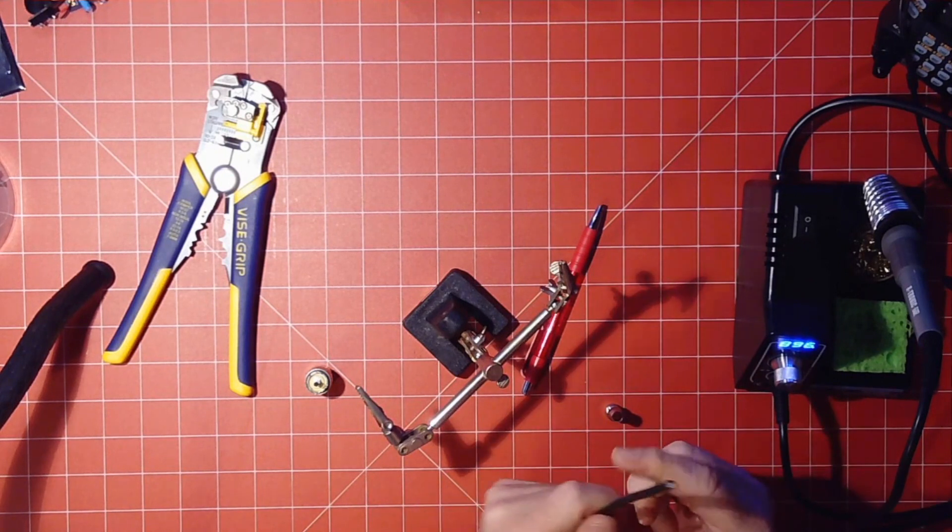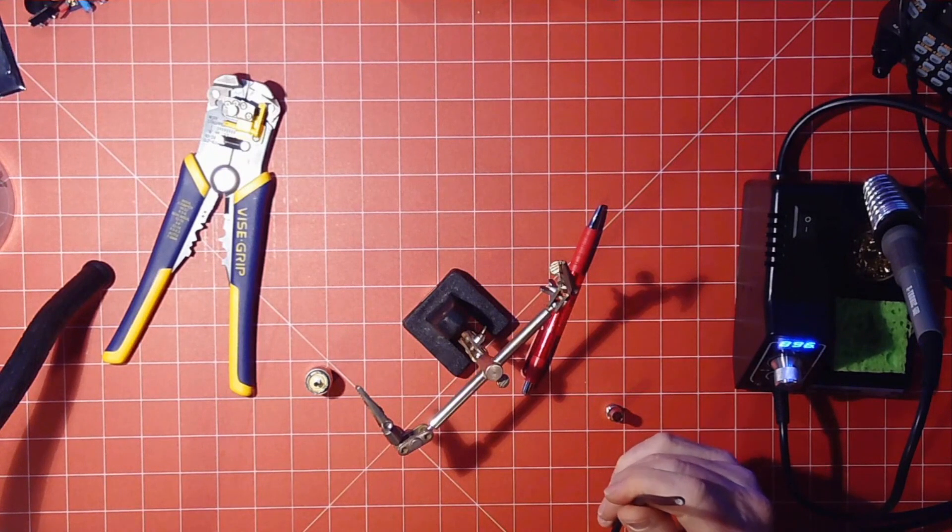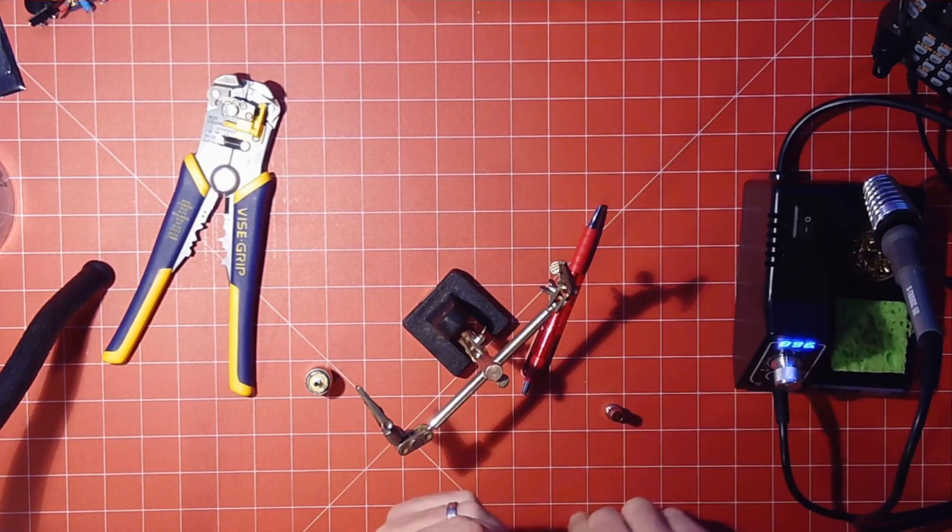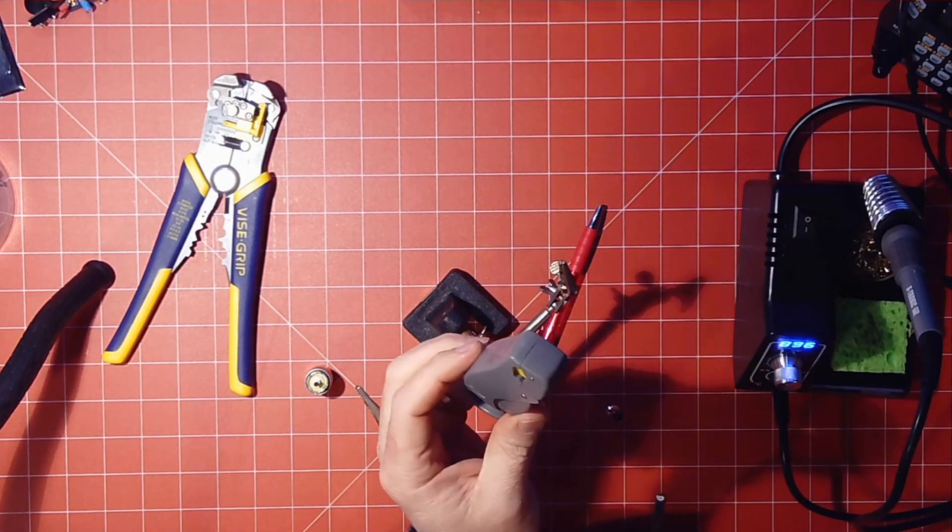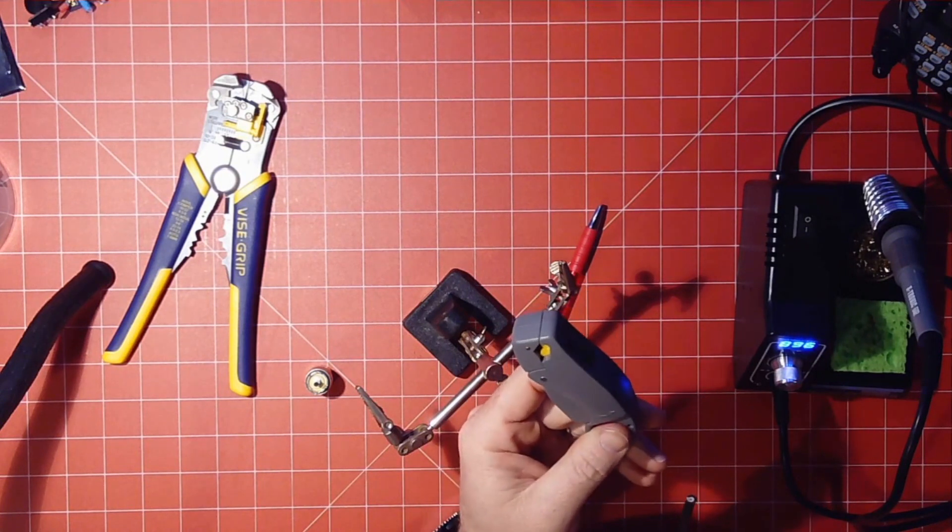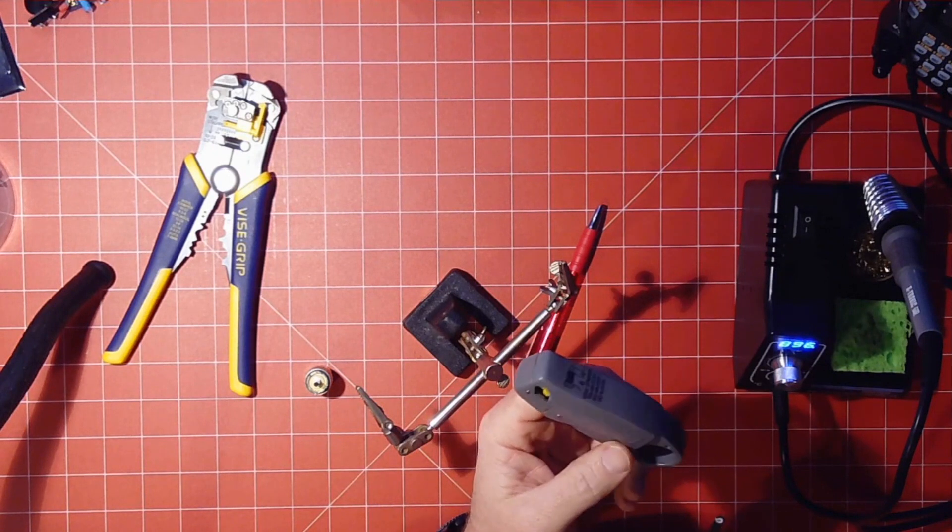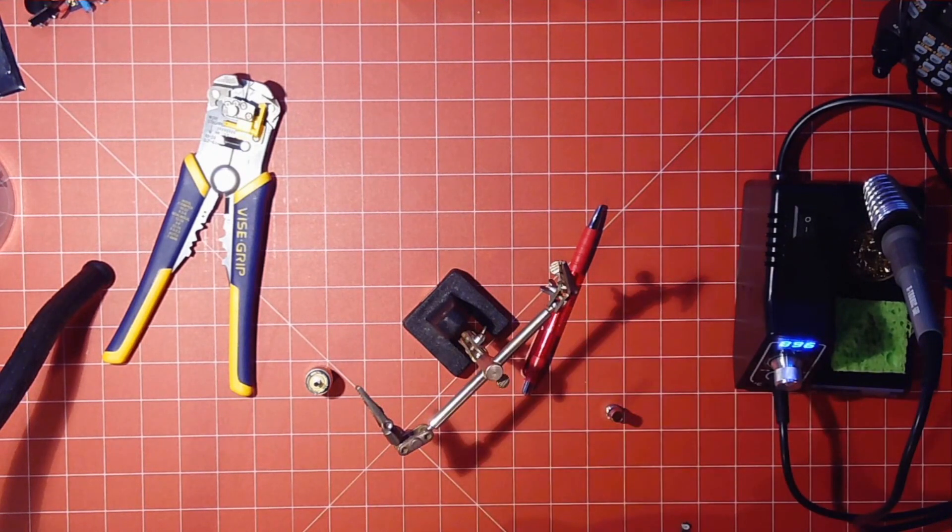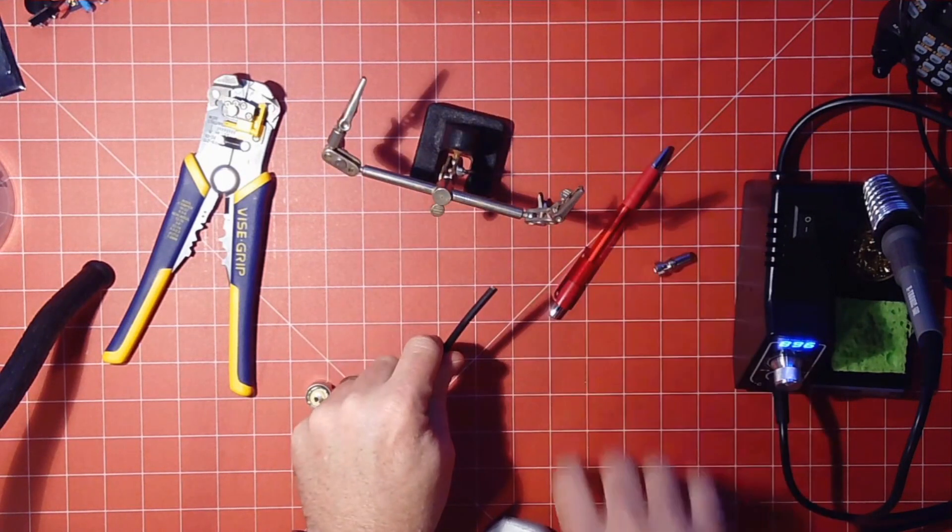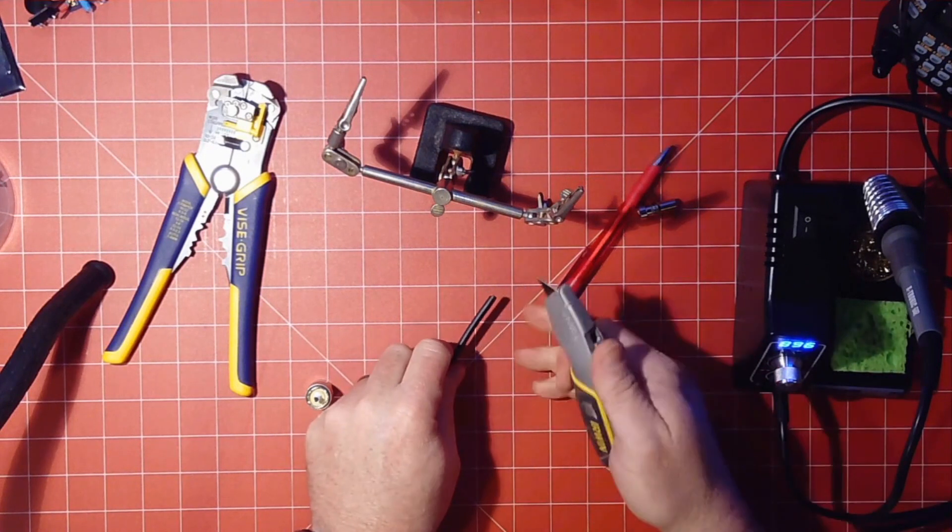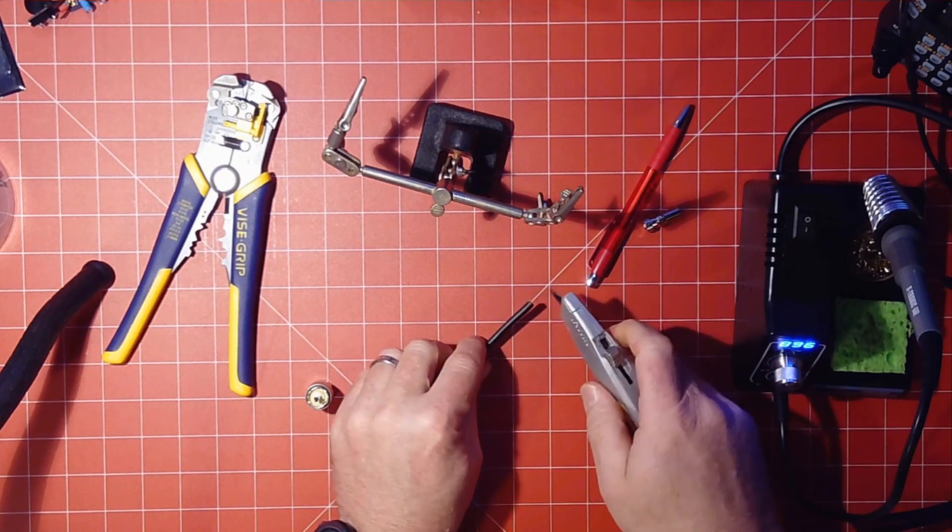So first things first is actually trimming this back. You can do this a couple different ways. They make tools like this where it'll strip this back for you. I picked this up at a ham fest for eight bucks maybe, but we're going to go ahead and do it without that because a lot of times you may not have that. But you do have some kind of knife. Maybe not this kind of knife, but you have some kind of knife, a pocket knife or something.